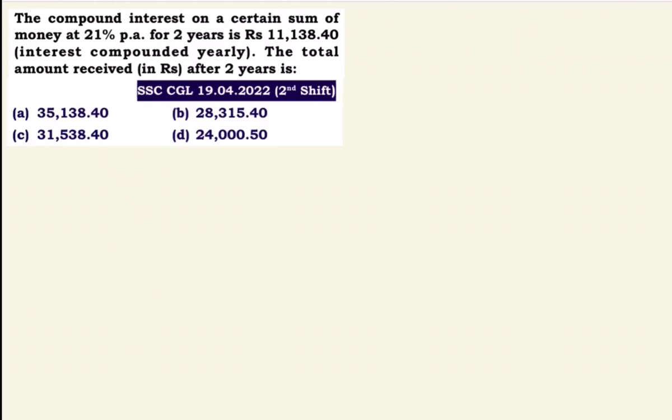So, 21% rate. Compound interest for two years is Rs.11,138.40. Total amount received after 2 years — principal is what we need to find out.